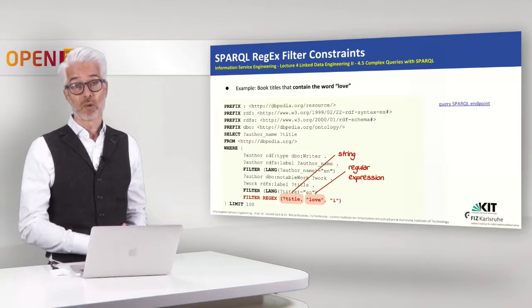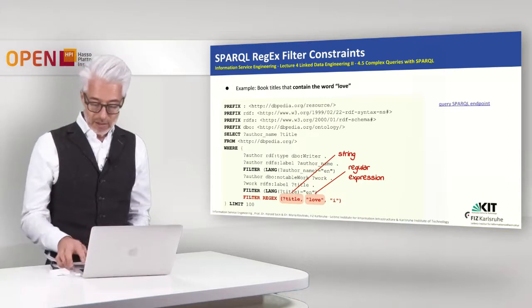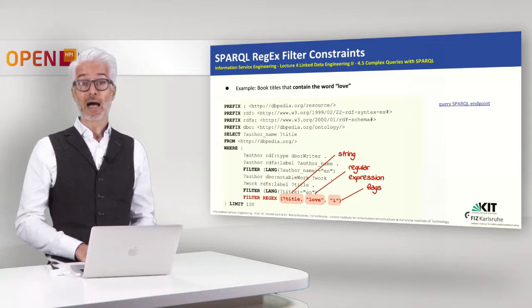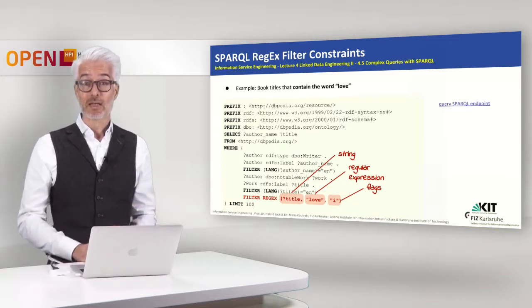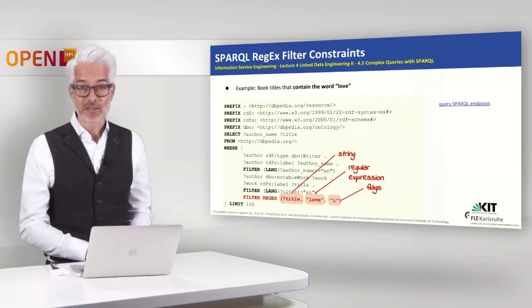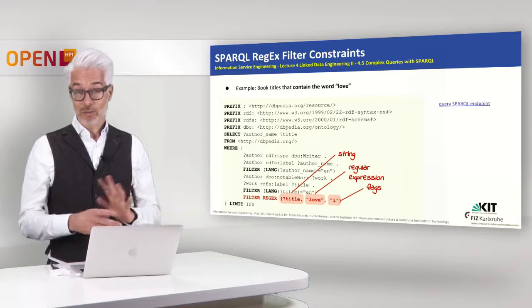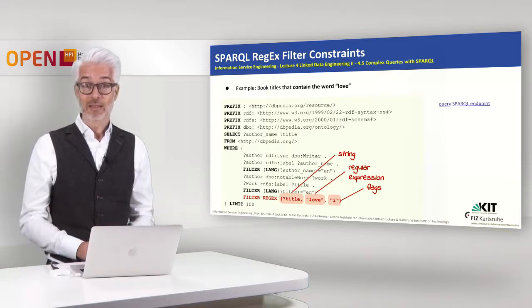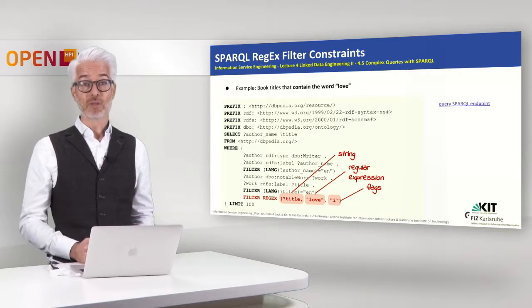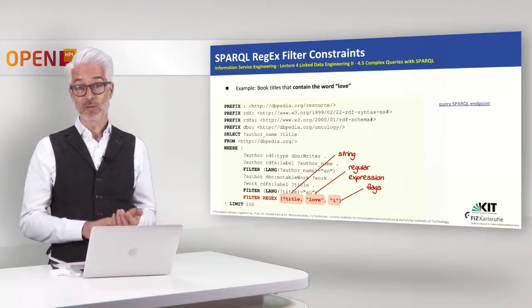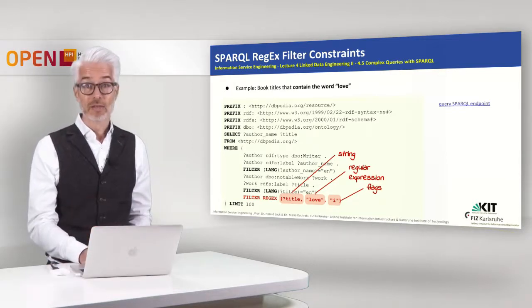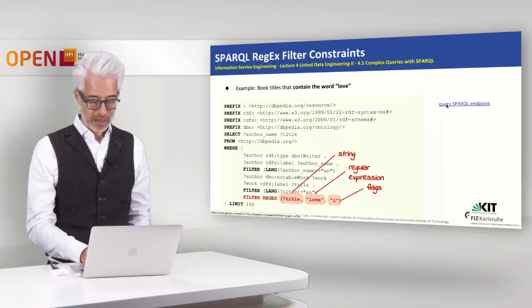This is a rather simple regular expression — we simply look for something which starts with the word 'love'. We can also use several flags; the most important is the 'i' flag, which means I don't care whether the letters are written in capital or lowercase. So in this specific case we are looking for words in the title which contain 'love', regardless of capitalization.